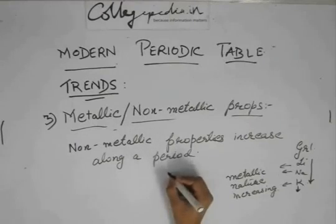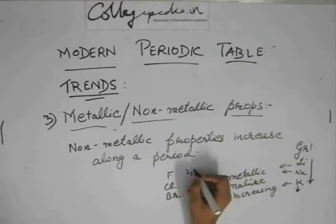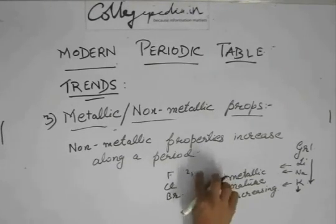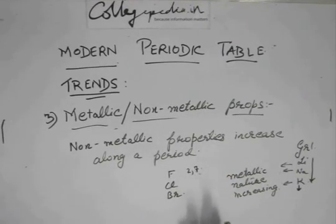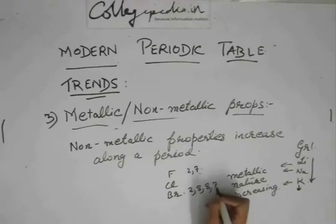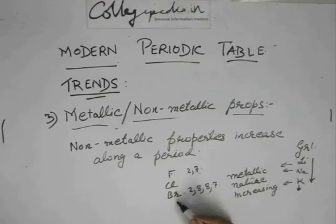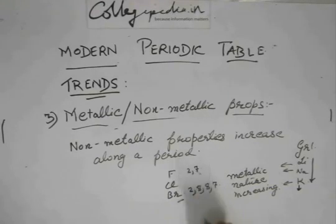This is true even for non-metals. Consider fluorine, chlorine, bromine. Fluorine has only two shells with configuration 2,7. If fluorine wants to donate seven electrons, it cannot do so very easily. Bromine, on the other hand, although it doesn't typically donate electrons, if it were to donate an electron it can do so much more easily than fluorine. So the metallic nature will always increase down the group, even for non-metals.